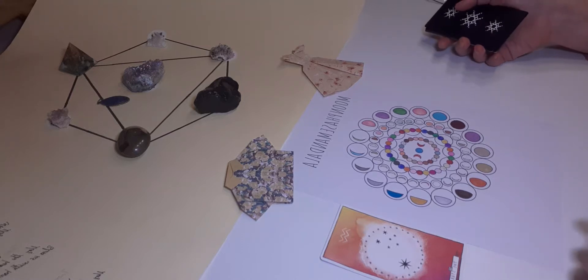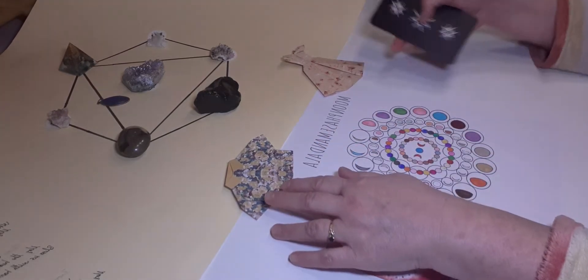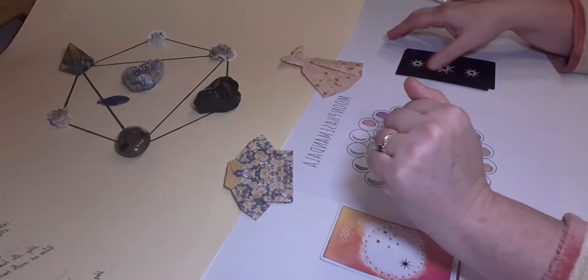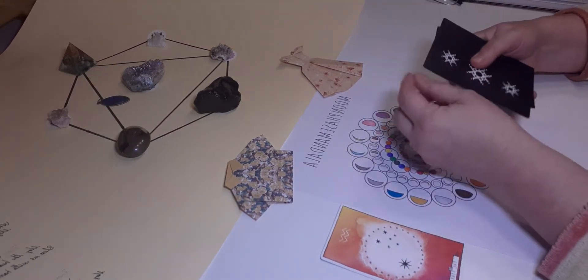This is my display for the new moon in Aquarius reading: the tarot card associated with Aquarius, moon mandala, the two origami bringing masculine and feminine energy, and the grid of crystals and cards as follows.